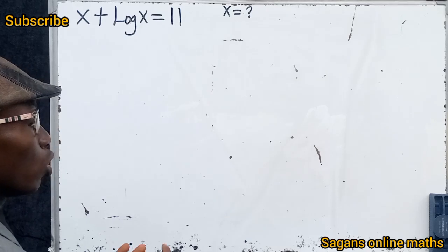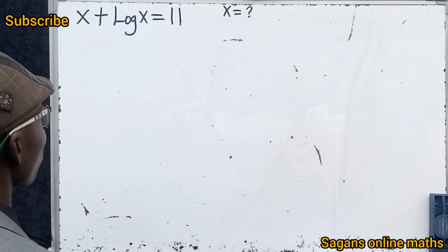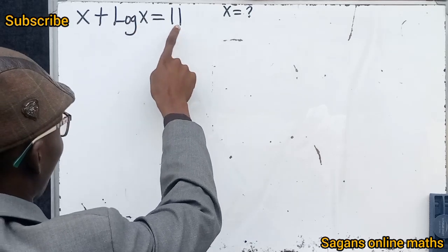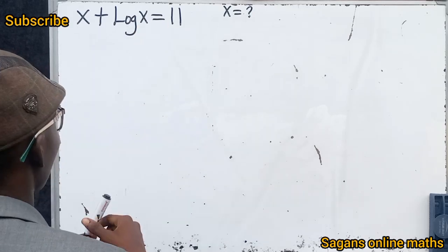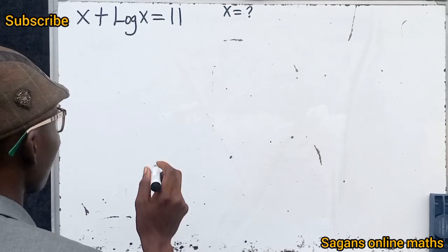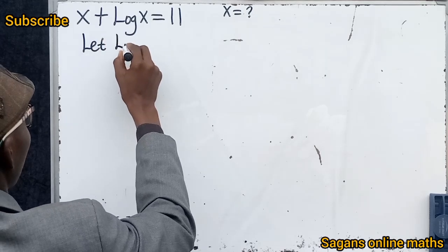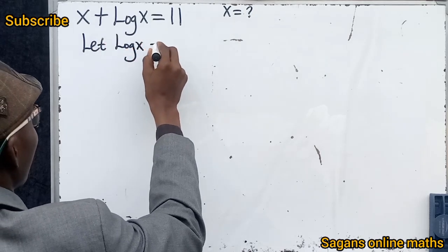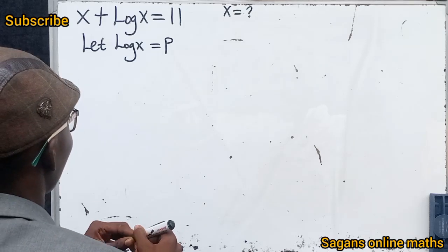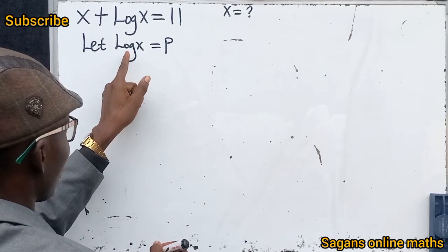This problem is as simple as ABC if you understand some properties of problem solving. We have x + log x = 11, and this is in base 10. We are not wrong if we let log x base 10 represent a variable. Let log x base 10 equal to p.